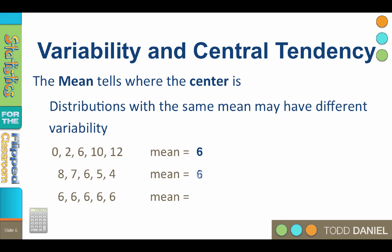Now this next data set also has a mean of six, but the numbers are closer together. This last data set has no variability. The mean is still six, but every score in the data set is highly representative of the mean.